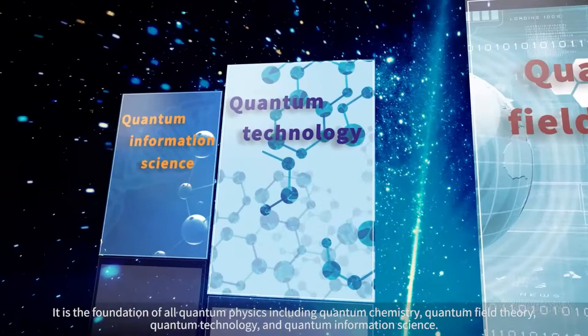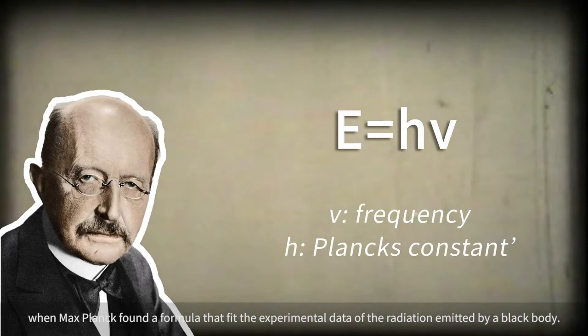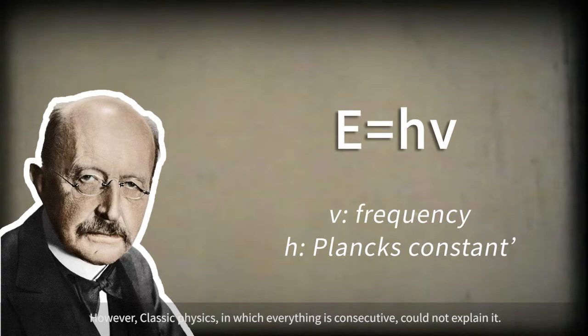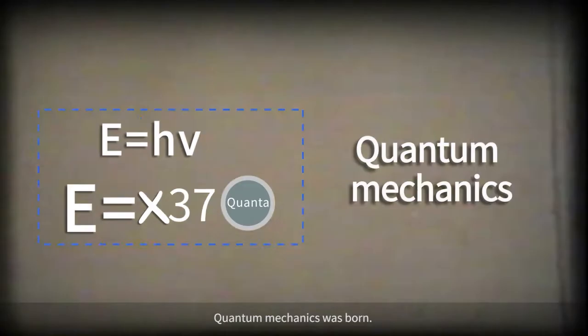The development of quantum mechanics began in 1900 when Max Planck found a formula that fit the experimental data of radiation emitted by a black body. However, classical physics, in which everything is continuous, could not explain it. When Planck assumed the minimum of energy as a definite value, which is called quanta, and the energy of radiation must be integer multiples of it, quantum mechanics was born.